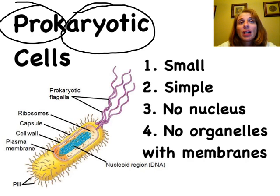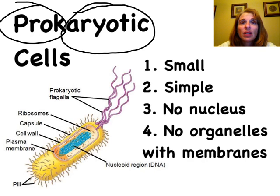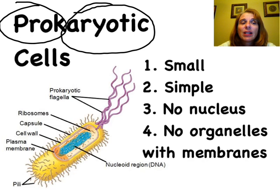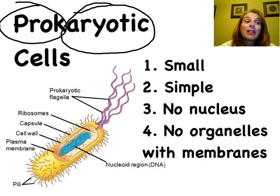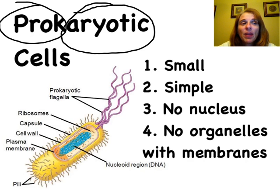So prokaryotic cells are lacking a kernel or nugget. Therefore, they have no nucleus. In addition to not having a nucleus, they're lacking any organelle inside that has a membrane. So no mitochondria, no Golgi apparatus, not even an endoplasmic reticulum to call its own. Therefore, it remains very small.